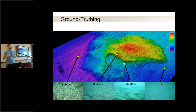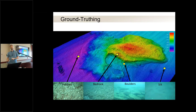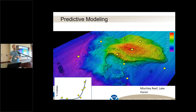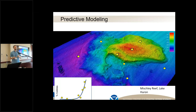We can start pulling out more information if we collect ground-truthing data. Here are a couple of locations where we dropped a camera and interpreted those videos and pictures to identify substrate types. Those types of data, when combined, help us fill in the gaps between the points because we can develop relationships between the attributes we see in ground-truthing data and the variables we collect with remote sensing sensors. That allows us to create a comprehensive picture of things like substrate type for Michele Reef.